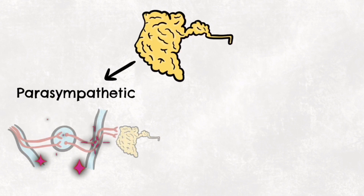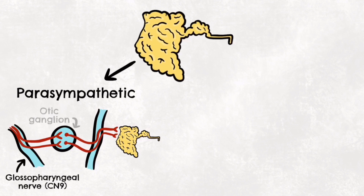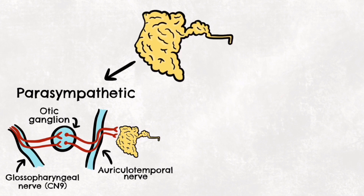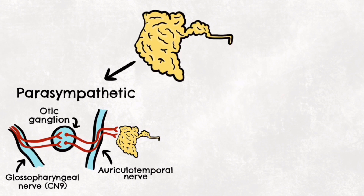The parasympathetic innervation to the parotid gland is complex, but we can simplify it. It begins with the glossopharyngeal nerve, cranial nerve 9, which synapses at the otic ganglion. The auriculotemporal nerve then carries parasympathetic fibres from the otic ganglion to the parotid gland. The auriculotemporal is a branch of V3, the mandibular nerve. Parasympathetic stimulation causes an increase in saliva production — think saliva for digestion, rest and digest.